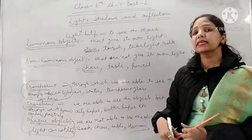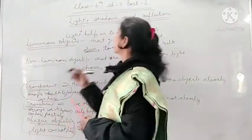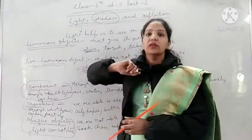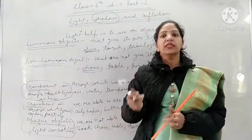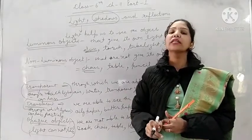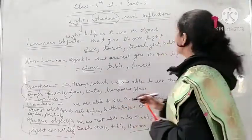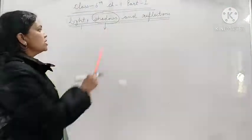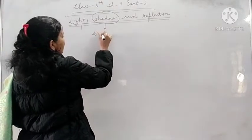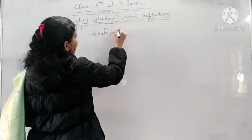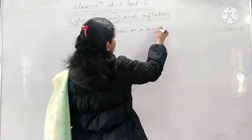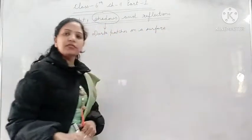Next — what exactly is a shadow? What is shadow? The dark patches formed on a surface are known as shadows.